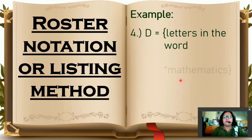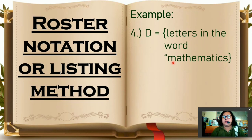Number 4. Set D, letters in the word mathematics. So if we are going to count the letters of the word mathematics, we will have 11 letters. So since we have a ruling on roster notation, that we are not going to repeat the same letters. So what would be the elements of set D? What do you think is the correct answer?